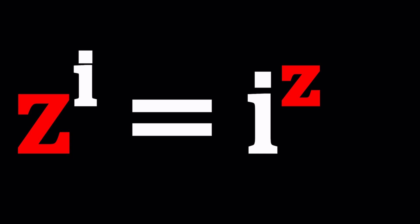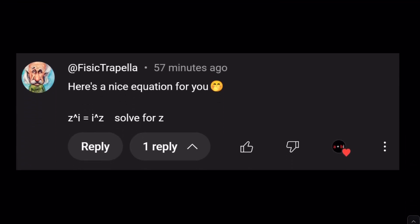This problem looks familiar, I hope I haven't made a video about this before, but even if I did, this video will be different. You know why? Because this is 2025. Did you know that? 2025 is 45 squared. Anyways, that's a different story. We have this equation and where does this equation come from? I want to say thank you to Physic Trapella for this idea. If you have any problem ideas, please share with us in the comment section to any video.